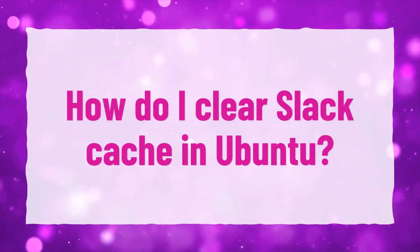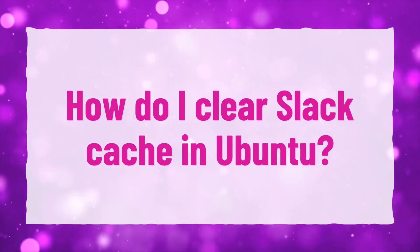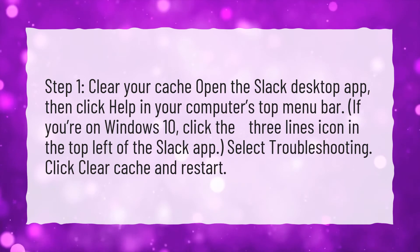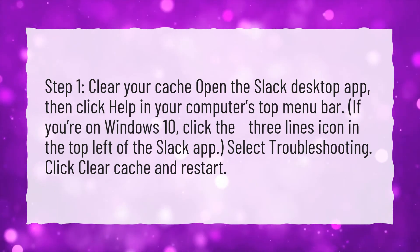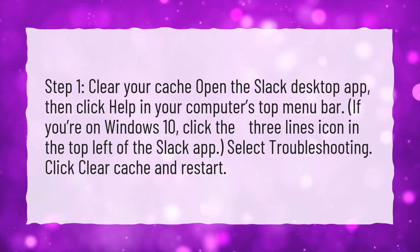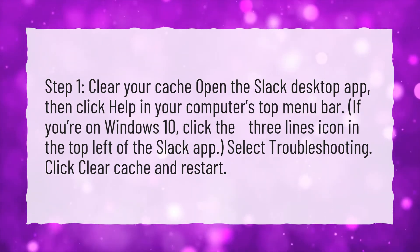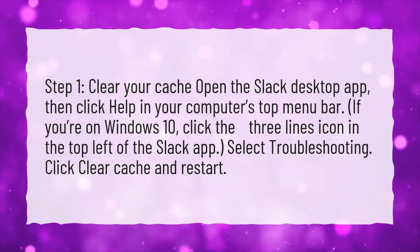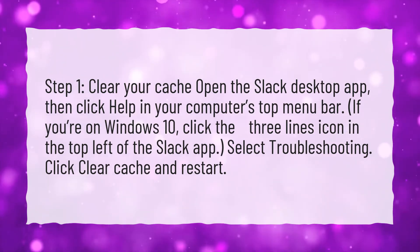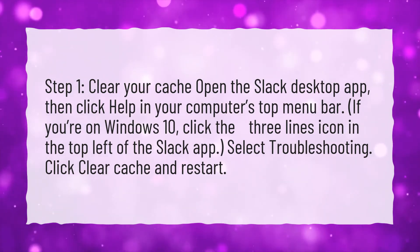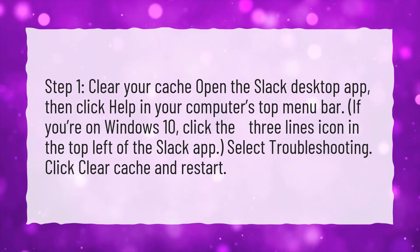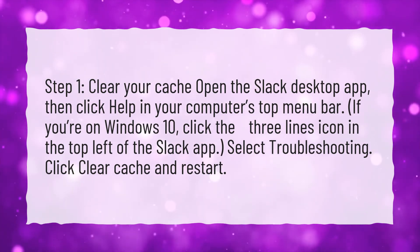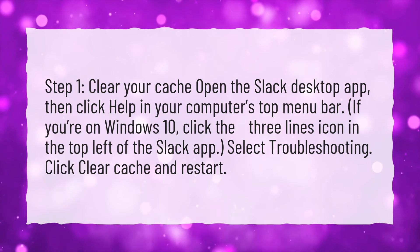How do I clear Slack cache in Ubuntu? Step 1: Open the Slack desktop app, then click Help in your computer's top menu bar. If you're on Windows 10, click the three lines icon in the top left of the Slack app. Select Troubleshooting, then click Clear cache and restart.